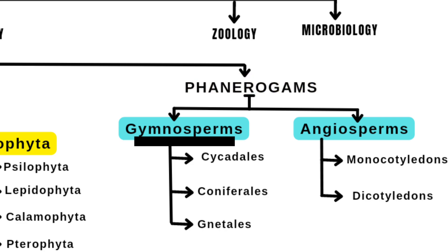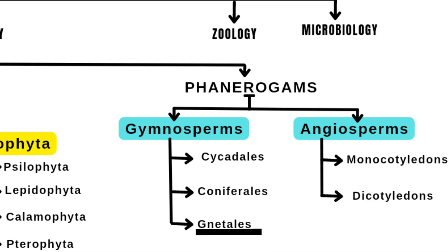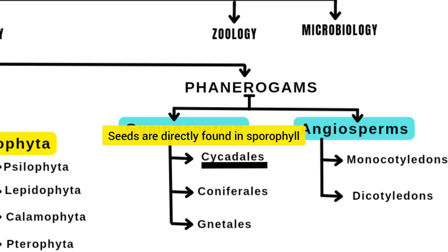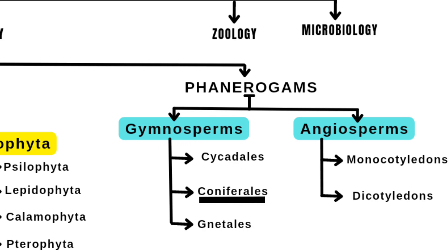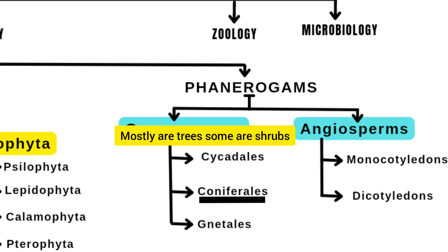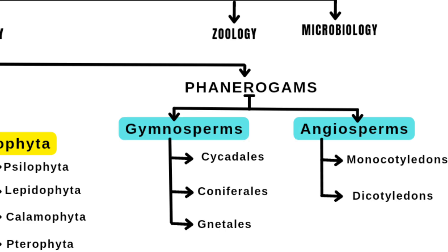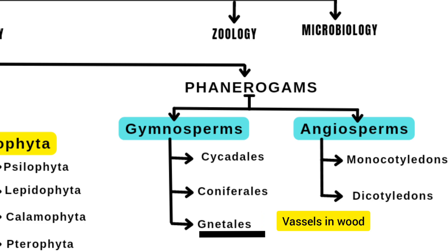Gymnosperms are further divided into Cycadales, Coniferales, and Gnetales. In Cycadales, seeds are directly found on sporophylls having pinnate leaves; they are dioecious, meaning each plant is either male or female. Coniferales are cone-bearing seed plants — mostly trees and some shrubs; examples are pines, spruces, etc. Gnetales is a division within gymnosperms having two cotyledons, opposite leaves, and vessels in wood; they are mostly xerophytic woody gymnosperm plants.